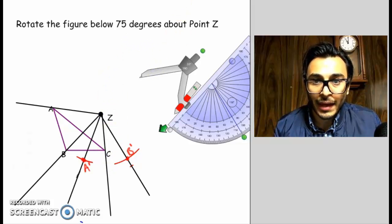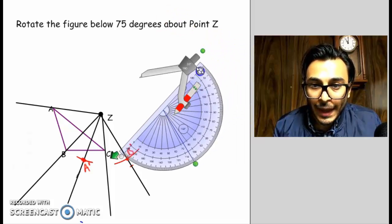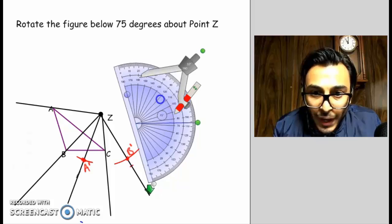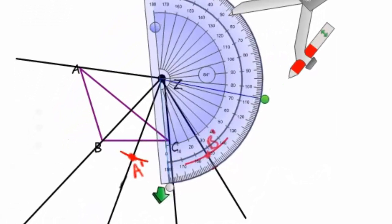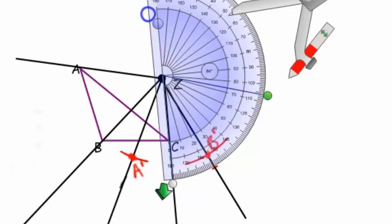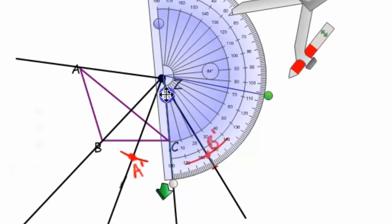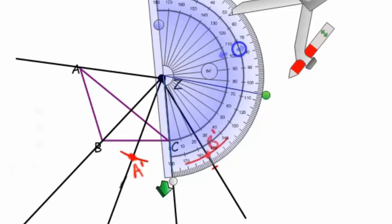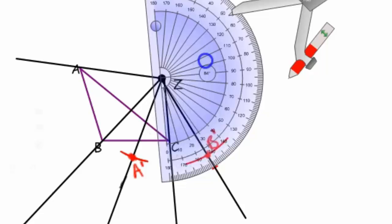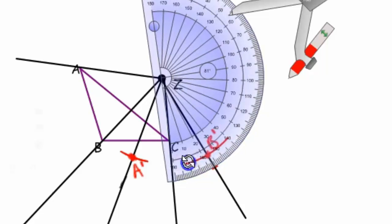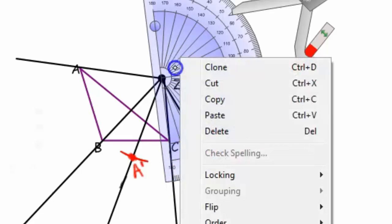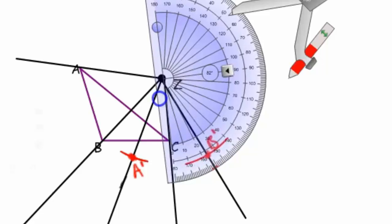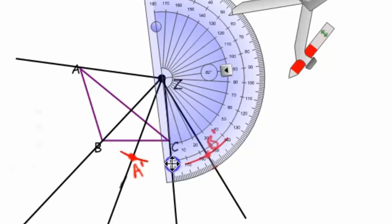And once we do that we have to measure our angle of rotation. So I need to take my protractor, place it right there. I have to align it perfectly with the zero degree mark. So sometimes it takes a little adjusting to get that zero degree mark to align perfectly with that line.